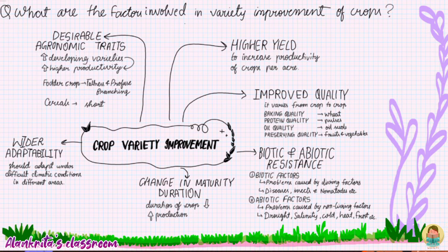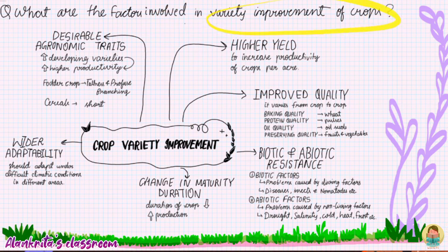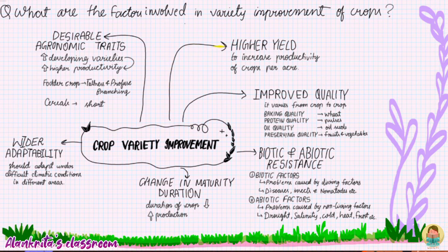Next is a mind map for crop variety improvement. It covers various sections like higher yield, improved quality, biotic and abiotic resistance, change in maturity duration, wider adaptability, as well as desirable agronomic traits. You can get the details by pausing the video.